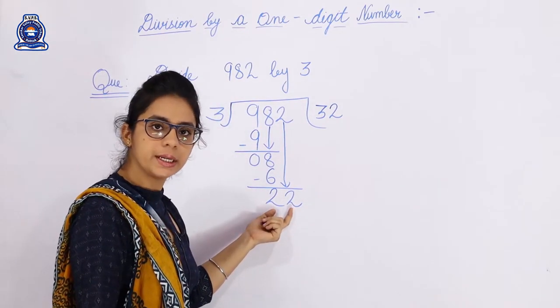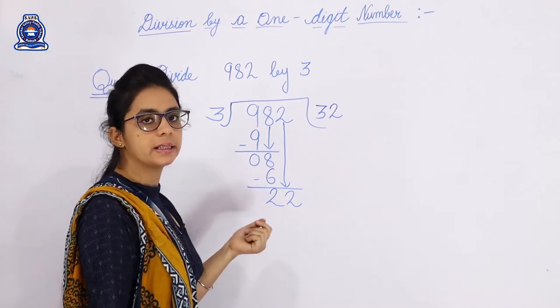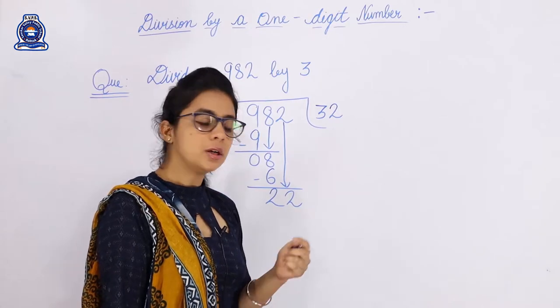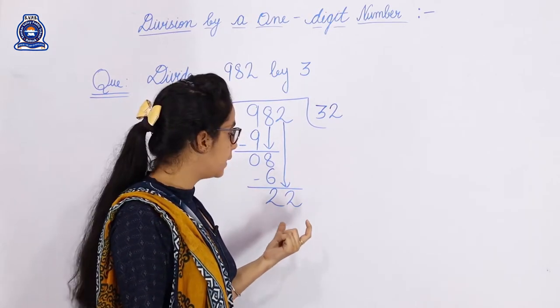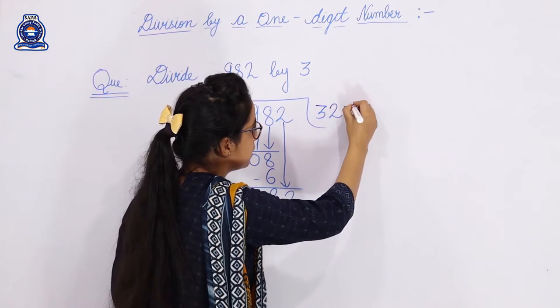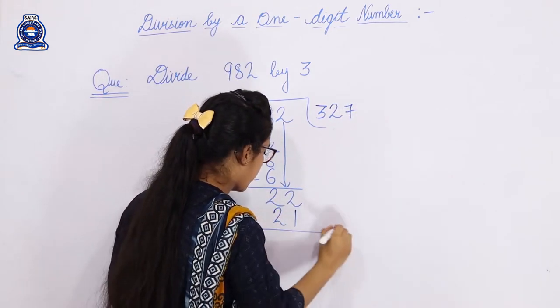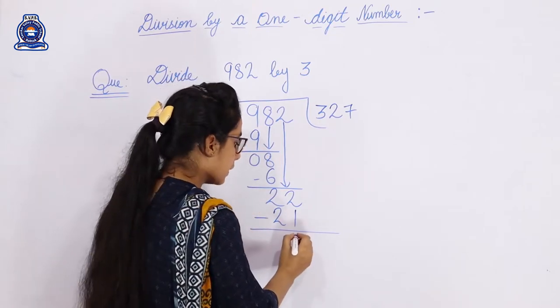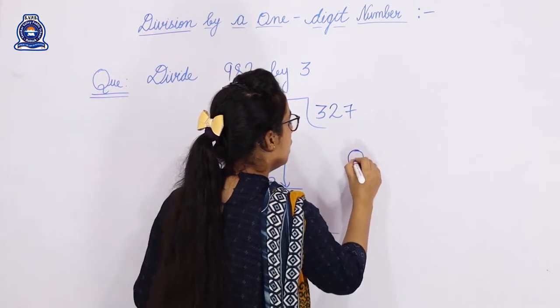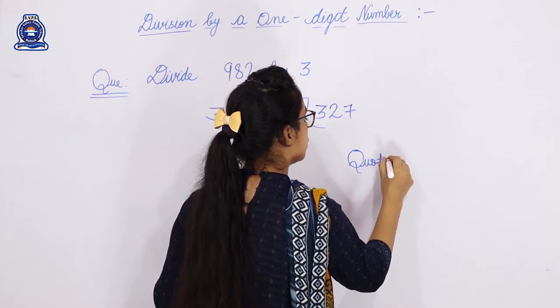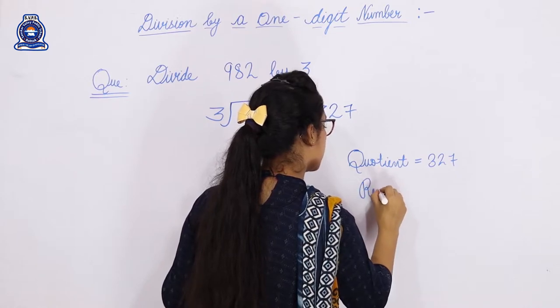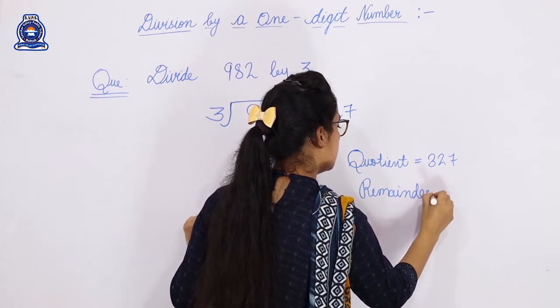Now for 22, we recite the table: 3 sevens are 21, 3 eights are 24. Since 24 is bigger, we use the smaller number 3 sevens are 21. We subtract 2 minus 1 equals 1, 2 minus 2 equals 0. So our quotient is 327 and our remainder is 1.